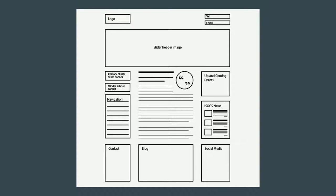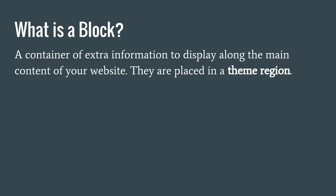Now I'm going to go through blocks. Blocks are containers of extra information to be displayed alongside the main region of the website. All blocks are placed in a theme region. Drupal has themes, and themes have theme regions — those are the places where you can put content. Each theme is responsible for determining its regions. In Drupal out of the box, the default theme is called Bartik, and Bartik defines the regions you see — each yellow rectangle is a region where you can place content.